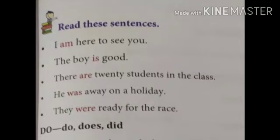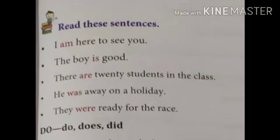Now students, read these sentences. I am here to see you. The boy is good. There are twenty students in the class. He was away on a holiday. They were ready for the race. So in these sentences we saw am, is, are, was, and were — these are the be verbs.